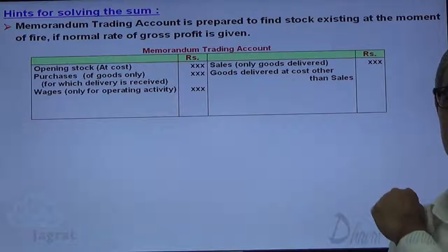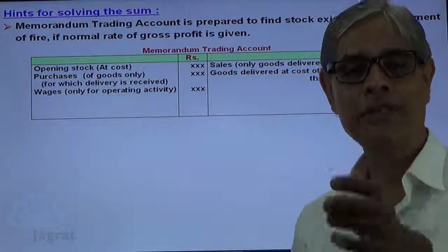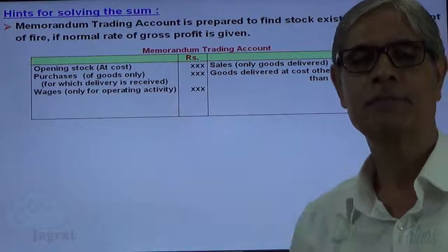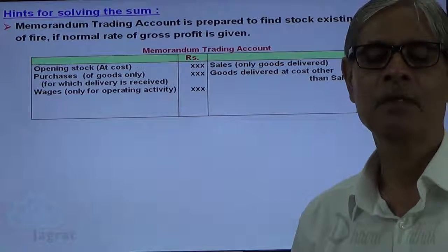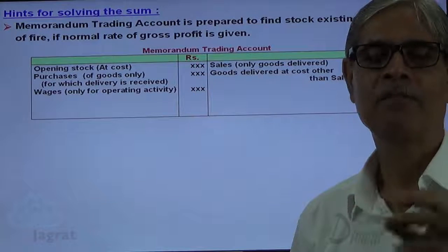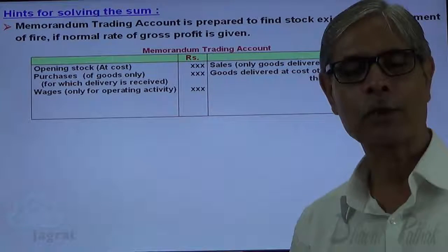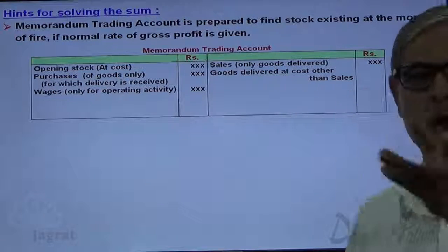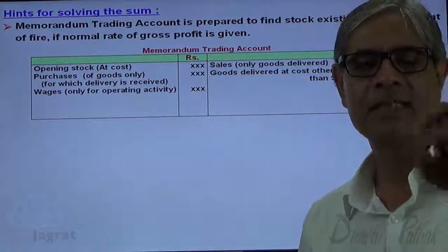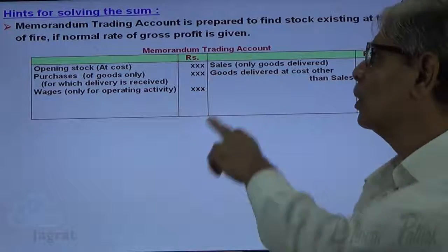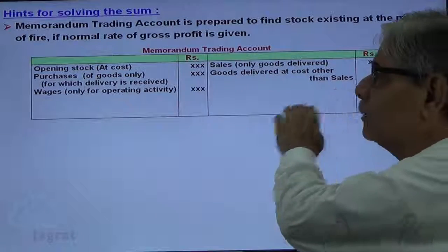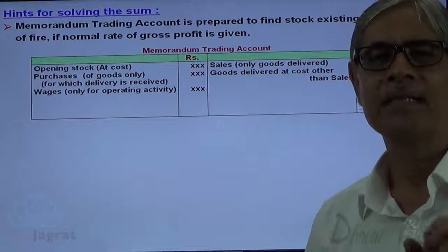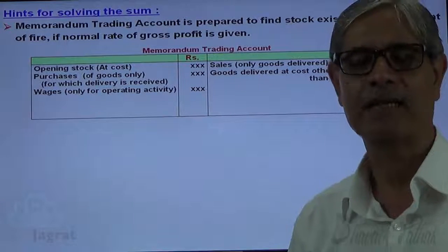Any goods delivered at cost other than sales — such as goods given for charity, goods stolen, and goods taken for personal use — are goods outgoings normally recorded at cost. If they are not recorded at cost, they have to be converted to cost. After converting, the cost should be recorded either on the credit side below sales, or it can be deducted from purchases. The better course of action is to deduct it from purchases, though many authors and teachers consider both accounting treatments correct.